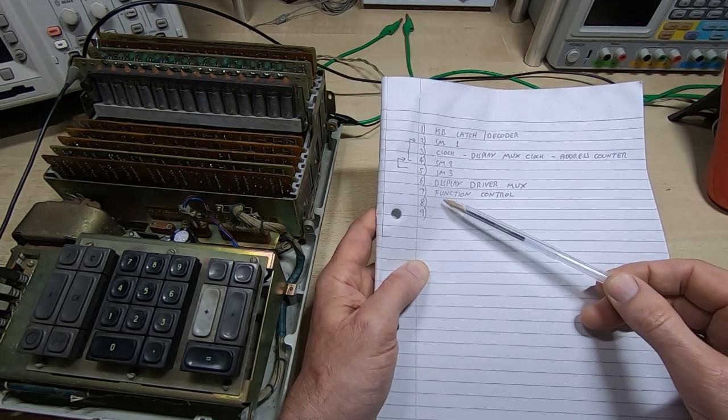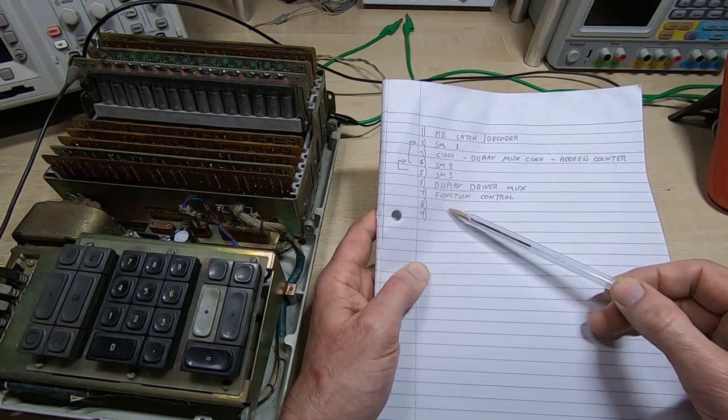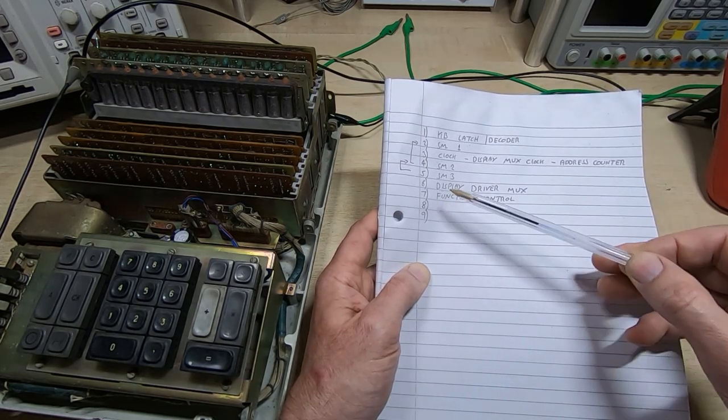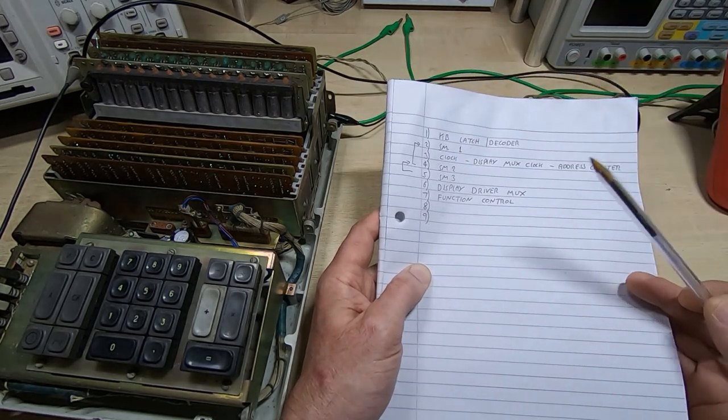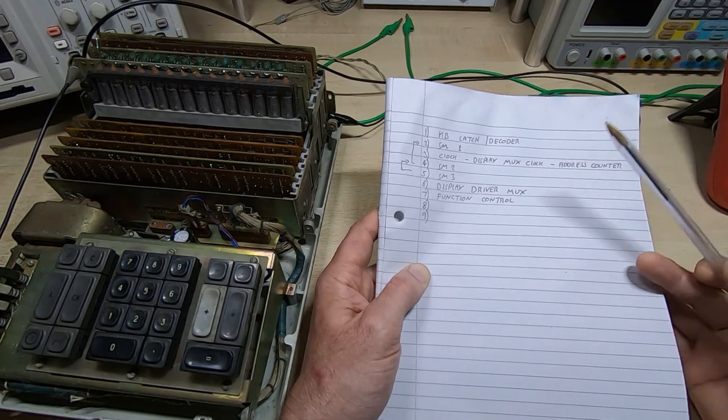Card six is of course the display driver and multiplexer. Seven is a functional control which I believe because it's connected from the keyboard function keys, so the things like plus minus multiply divide, those lines go through to card seven.